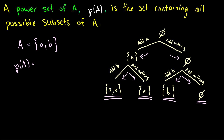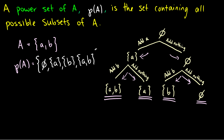So the power set is the set containing all of those subsets: the set containing the empty set, the set containing A, the set containing B, and the set containing A and B — all together in one set.